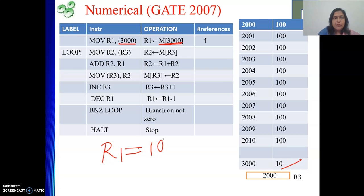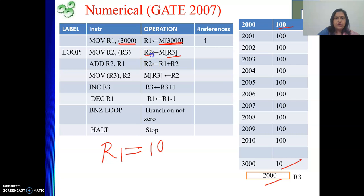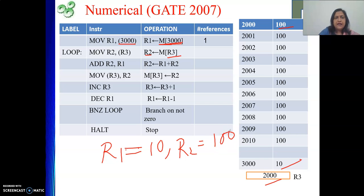Next instruction: MOV R2, [R3]. Here R3 is holding an address, which is 2000. At address 2000 we have the value 100, so that is given to R2. Therefore R2 will hold the value 100. How many times have we referred to memory? Only once. Memory references: 1.